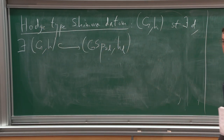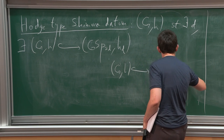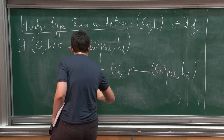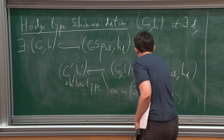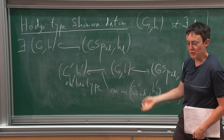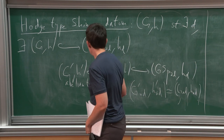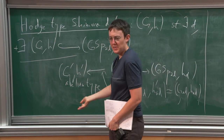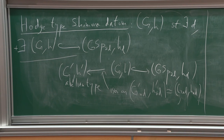Abelian type Shimura varieties are going to have — over the connected components — quotients of connected components of Hodge type Shimura varieties by finite groups. Then you reduce from Abelian type to Hodge type, which is not as easy as it sounds, but it can be done. PL type: you don't just give an injection, but G is going to be the group of symmetries of a certain alternating form on a certain algebra.